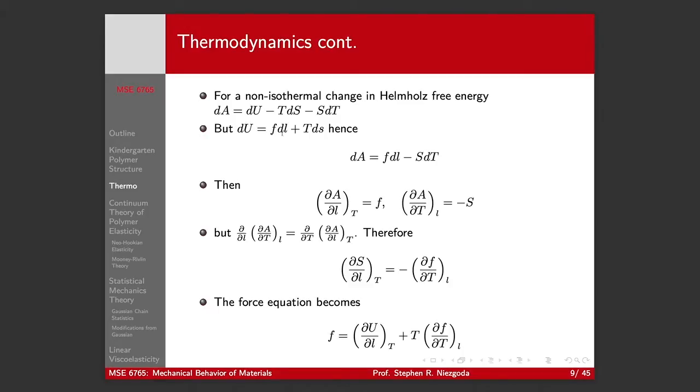But we said that dU is equal to, on the other previous page, is FdL plus TdS, so therefore we can substitute that in here, and we have our increment in Helmholtz is equal to F times our increment in length, our force times our increment in length, minus S times our temperature increment.